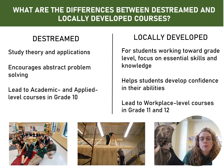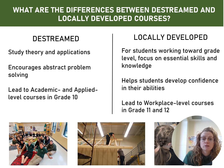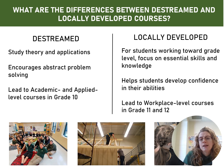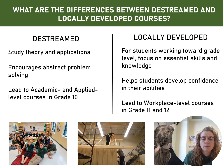When we head into grade 9 we are choosing between two different levels. You could choose de-streamed or locally developed level courses for your child. If you have older students you might remember academic, applied, and locally developed as being three options. In the last couple of years the ministry has implemented de-streaming in many of the courses offered in grade 9, so that is a shift if you have older students — it might not look the same.